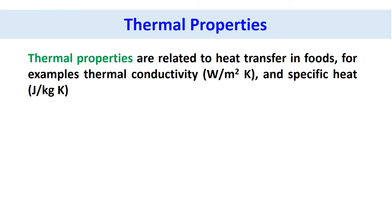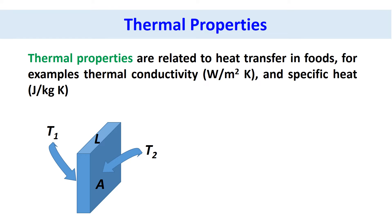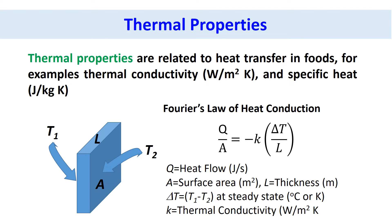Thermal properties are related to heat transfer in foods, for example thermal conductivity and specific heat. We can understand thermal conductivity from the conductive heat transfer through a slab as shown in the slide. At steady state, we can write the heat transfer rate from Fourier's law of heat conduction. The proportionality constant k can be defined as the thermal conductivity of the slab. Thermal conductivity of a material depends on the characteristics of the solid, liquid, and gaseous phases of the material and their arrangement.